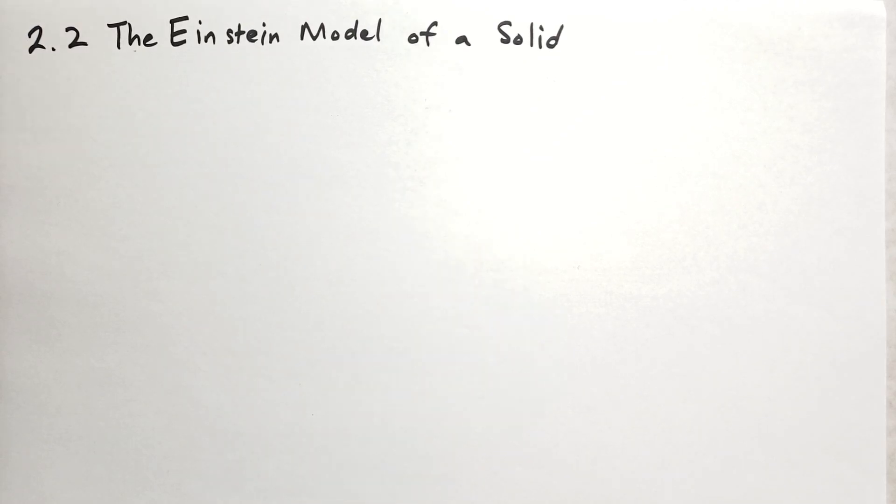Welcome back. This is Jonathan Gardner covering Schroeder's An Introduction to Thermal Physics. This is section 2.2 where we go over the Einstein model of a solid.